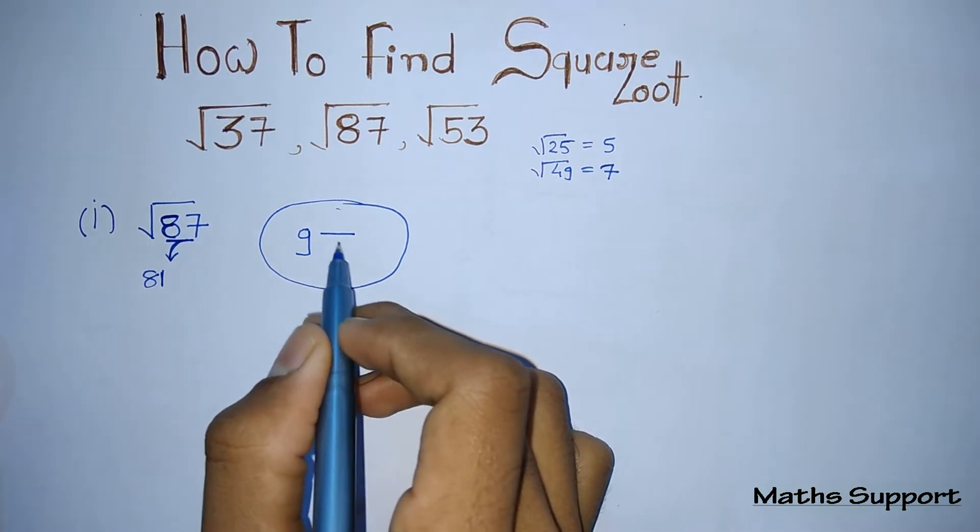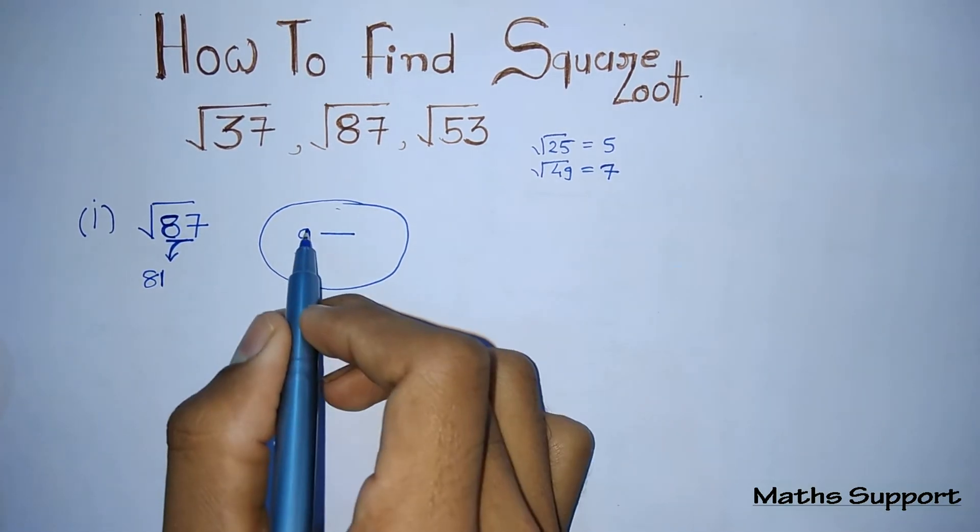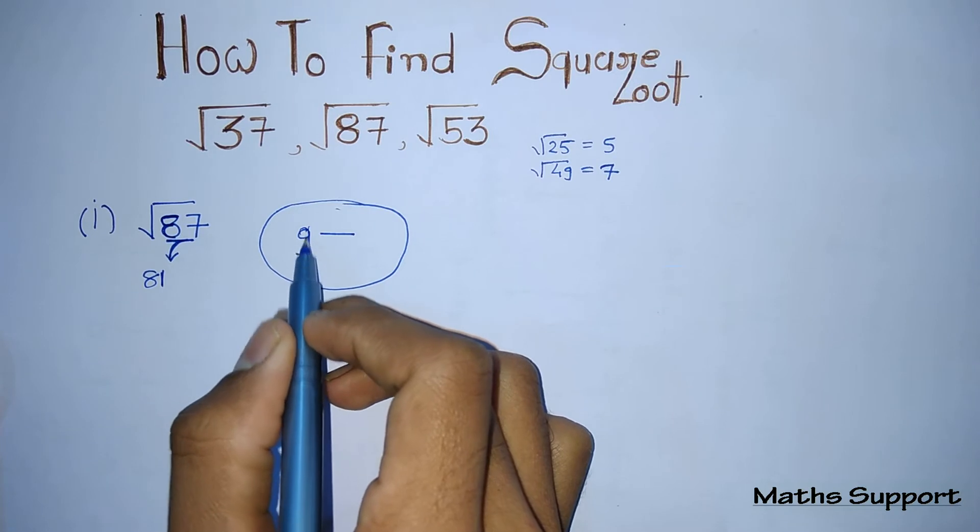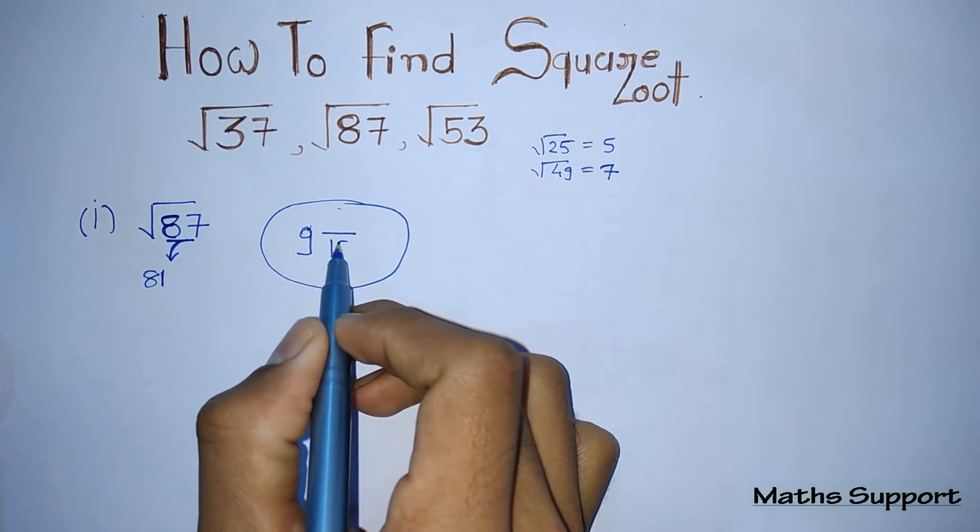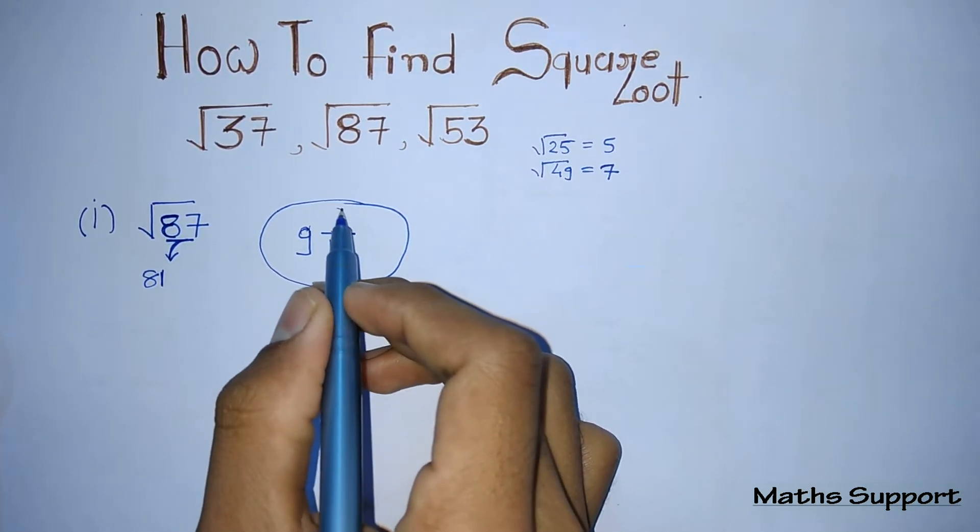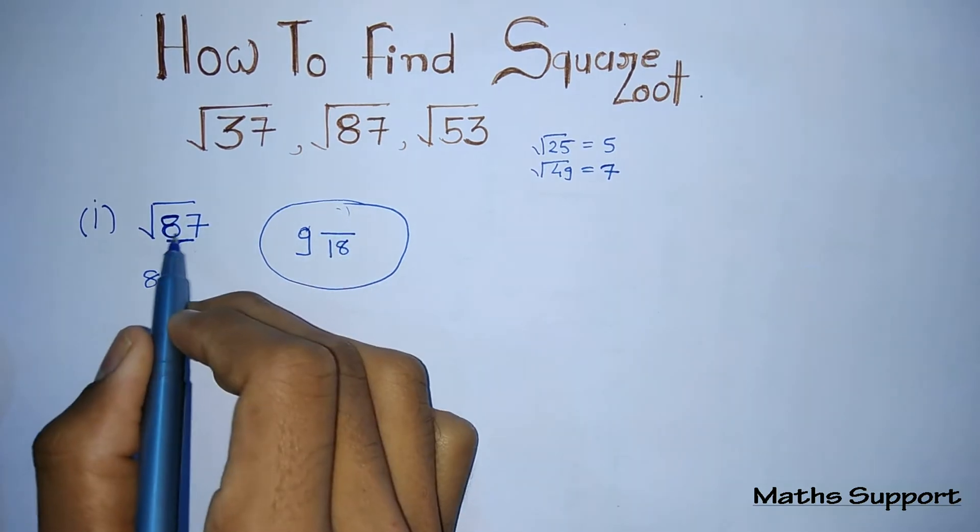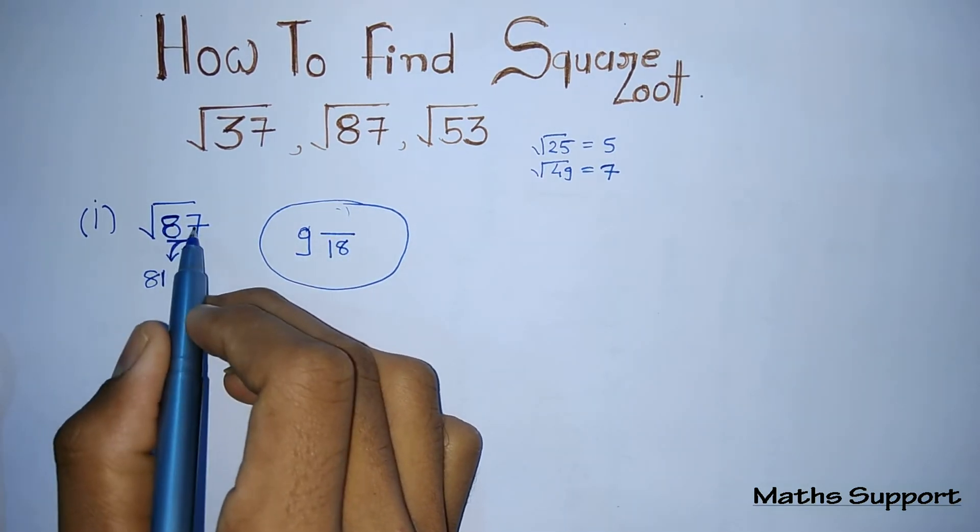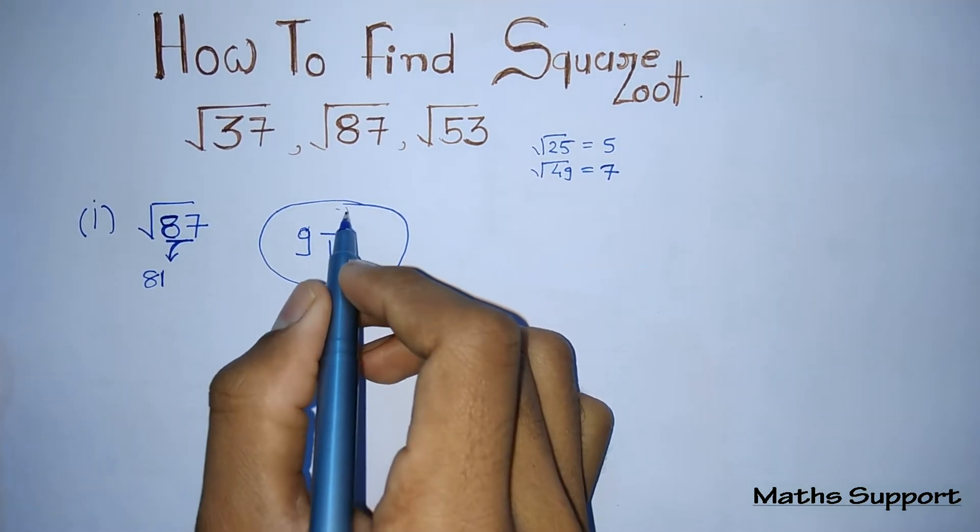This is a mixed fraction, so you need to fill numerator and denominator. Whatever value you are getting here, double it—that is 18—put it in the denominator. For the numerator, put the difference of these two: 87 minus 81, that is 6.